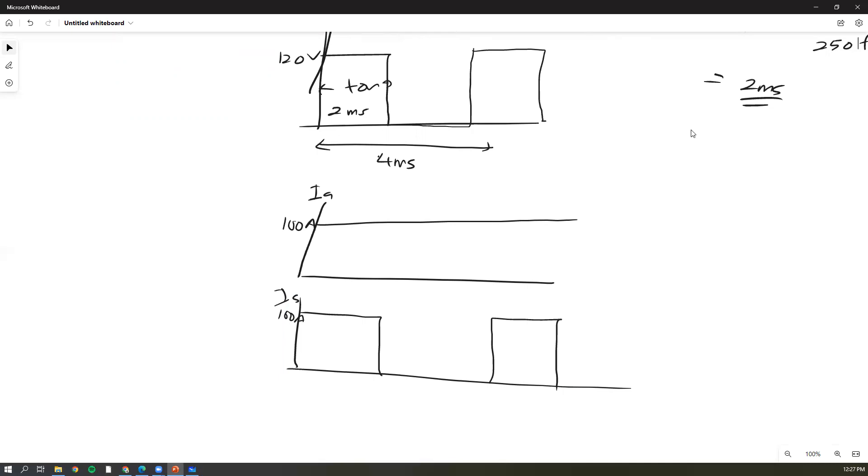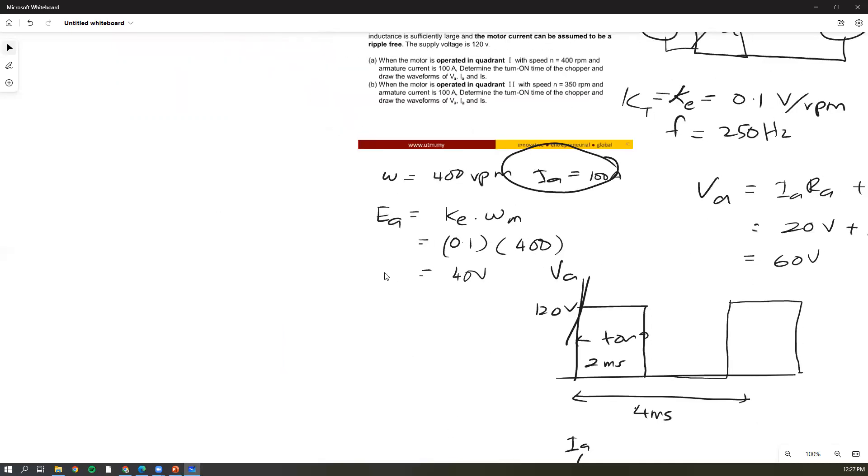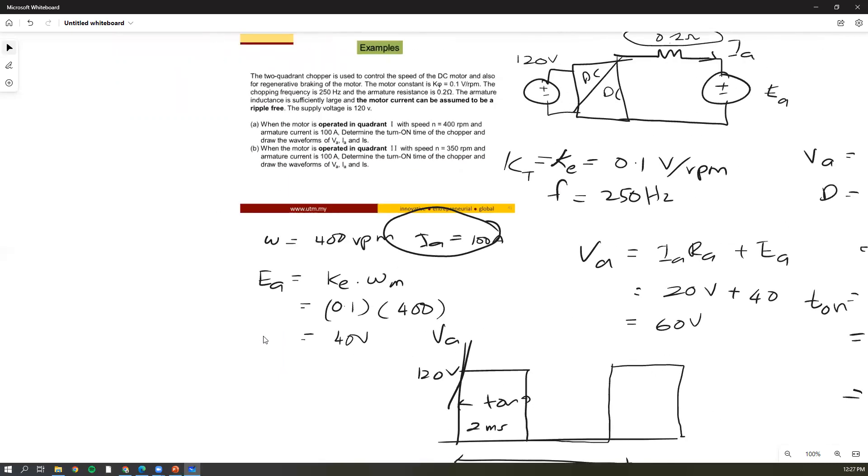The second question: when the motor is operated in quadrant number two, the speed is 350 rpm and the armature current is 100 amperes. This one is similar to the first question, so I think you are able to do it. The solution is already there. That's all for me, thank you very much.